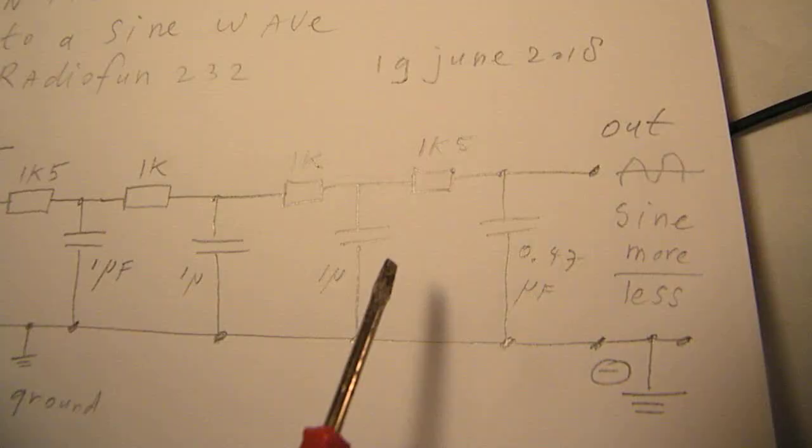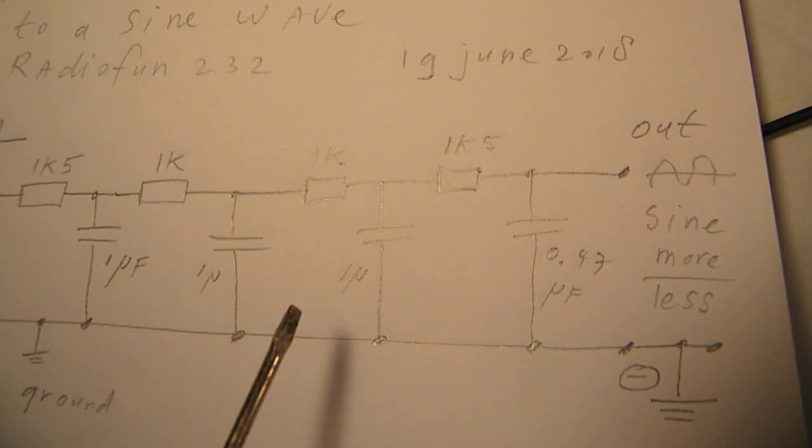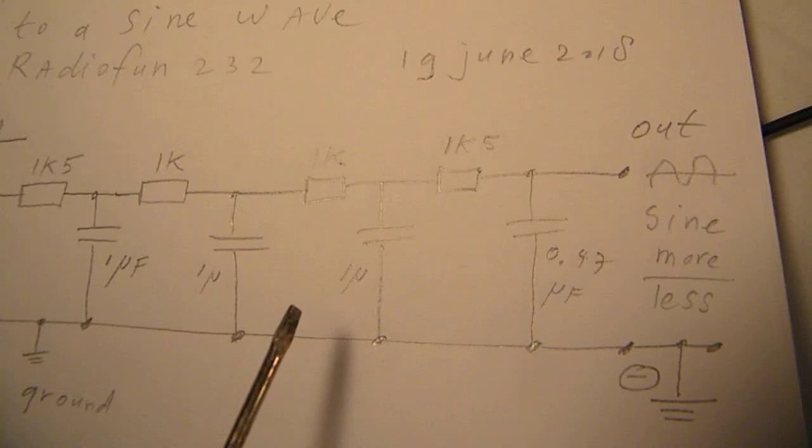So 1k, 1k5, 10k, and also these capacitors have to be the same value in principle.